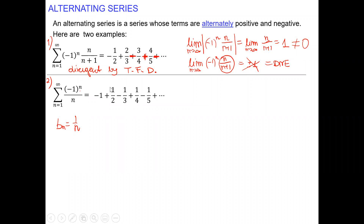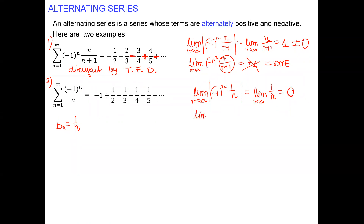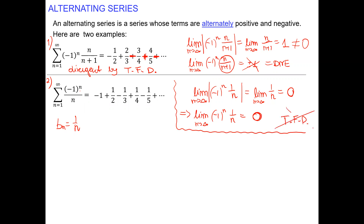Now let's look at the second example — negative one to the n times one over n. When we apply this limit theorem, we will get zero. Applying the absolute value to the alternating sequence, the limit of one over n as n goes to infinity is zero — one over a big number is a small number. If the limit of the absolute value is zero, then the limit of the sequence is also zero, and we know nothing about convergence or divergence. Test for divergence is not applicable.